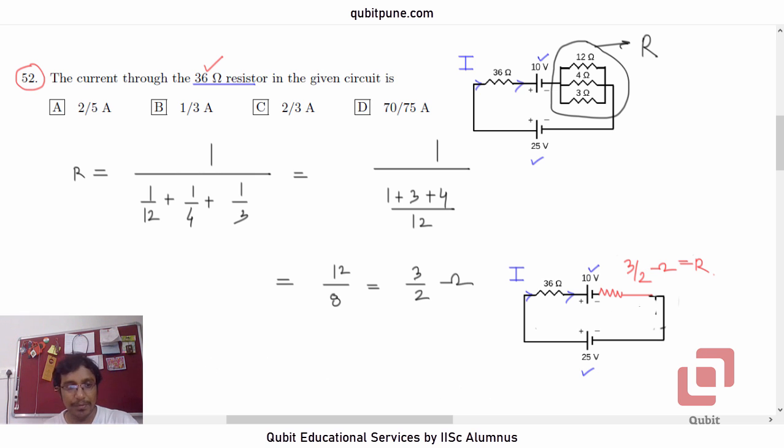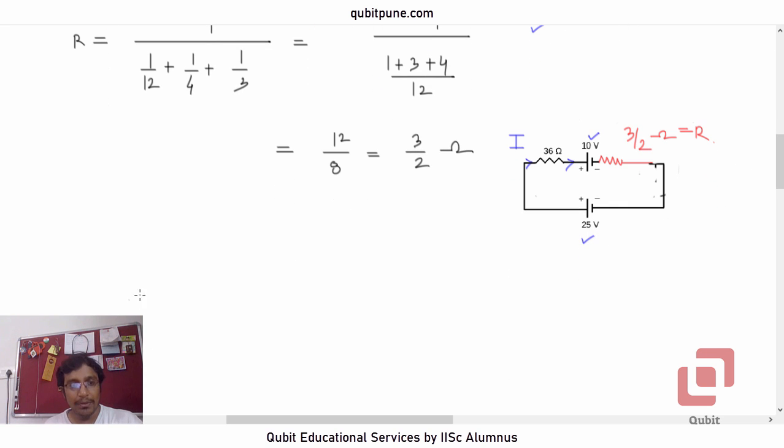Now the rest of the job is very simple. You have to apply the loop rule or Kirchhoff's voltage law. Let us start tracing the loop in this direction clockwise. So 25 will be positive and 10 will be negative. For resistor what will it be? For the first one it is 36 I and for the second one it will be 3 by 2 I. This should be equal to 0. There are 4 elements in the LHS of the loop rule. 2 corresponding to batteries and the other 2 corresponding to the resistors. 36 ohms and 3 by 2 ohms.